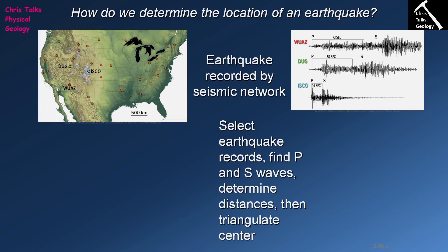Imagine you are in two cars. You start from the same location at the same time, but you're driving at 80 miles an hour and your mother is driving at 50. Over a very short distance the cars arrive at approximately the same time, but over 100 miles the faster car would arrive much earlier. The same thing happens with seismic waves — because the P wave moves faster, it arrives first, and the gap to the S wave grows with distance.